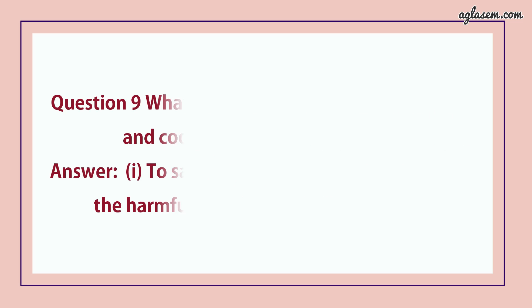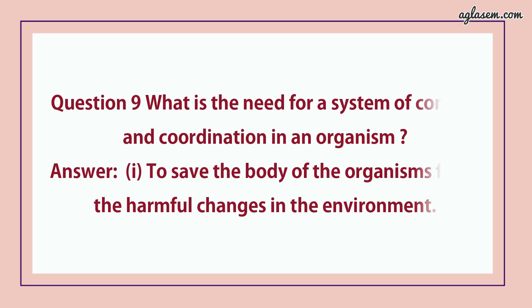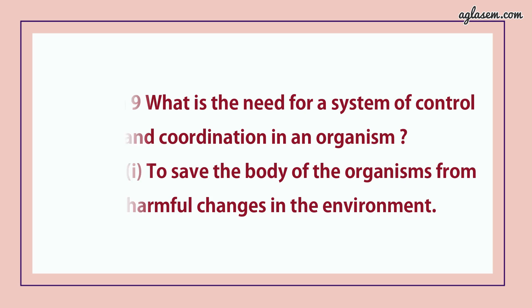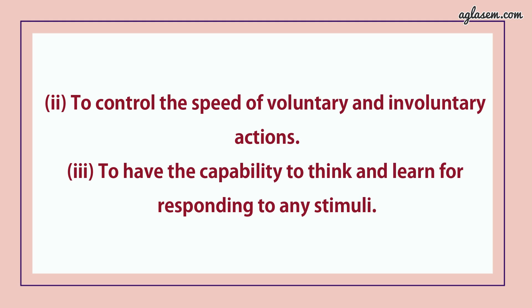Question number 9 says, what is the need for the system of control and coordination in an organism? Answer is: first, to save the body of an organism from harmful changes in the environment. Second, to control the speed of voluntary and involuntary actions. Third, to have the capability to think and learn for responding to any stimuli.